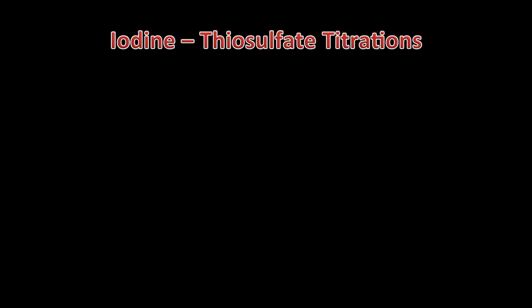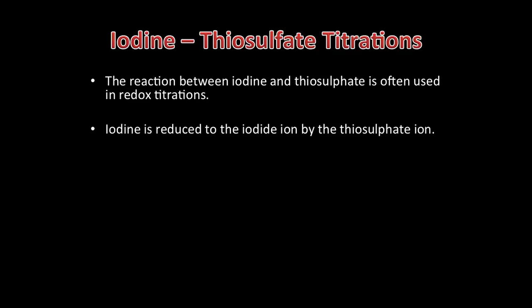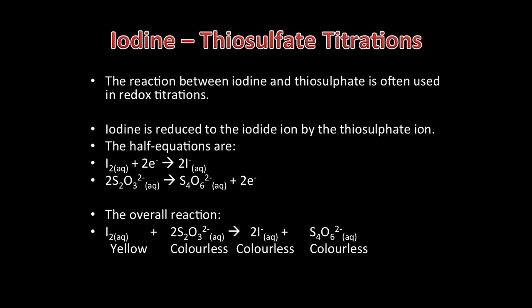Moving on to iodine-thiosulfate titrations, which are a little more complicated than the manganate titrations. The reaction between iodine and thiosulfate is often used in redox titrations. Iodine is reduced to the iodide ion by the thiosulfate ion S2O3 2-. The half equations are I2 + 2e- → 2I-, and 2S2O3 2- → S4O6 2- + 2e-. The overall equation is I2 (yellow) + 2S2O3 2- (colourless) → 2I- + S4O6 2-, so the colour change is yellow to colourless.